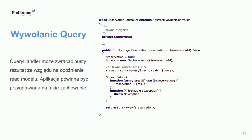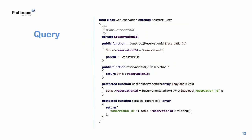Jak może wyglądać takie query? Query to jest prosty obiekt DTO, który dziedziczy po abstract query proofowym, posiada pole reservation ID oraz metody do serializacji i deserializacji.